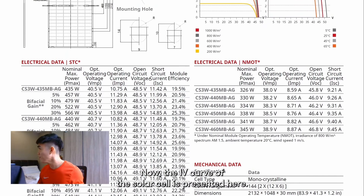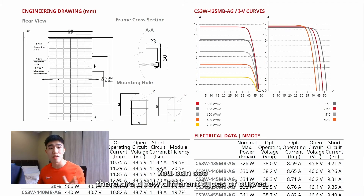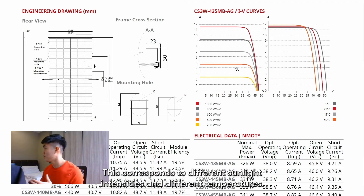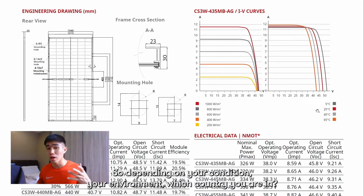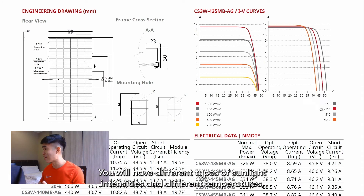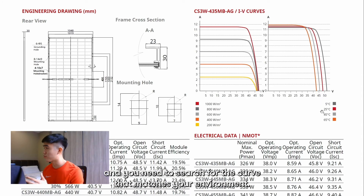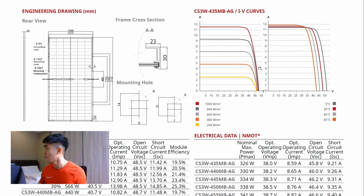The IV curve of the solar cell is presented here. You can see there are a few different types of curves, corresponding to different sunlight intensities and different temperatures. So depending on your environment and which country you're in, you will have different sunlight intensities and temperatures, and you need to find the curve that matches your environment — this will provide a different efficiency.